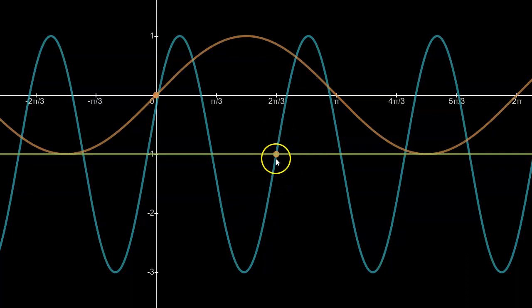In this case, I can see that the distance from this point back to the y-axis is 2 pi over 3. Therefore, the horizontal phase shift is 2 pi over 3.